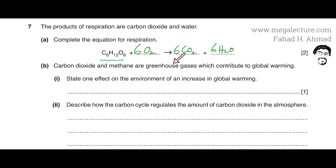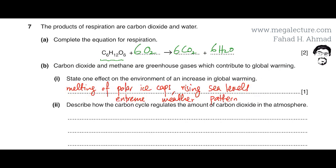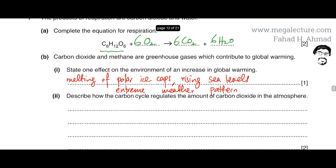Part B: carbon dioxide and methane are greenhouse gases which contribute to global warming. State one effect on the environment of an increase in global warming. Global warming causes a rise in temperature leading to the melting of the polar ice caps in the Arctic and Antarctica, causing sea levels to rise and also causing extreme weather patterns.